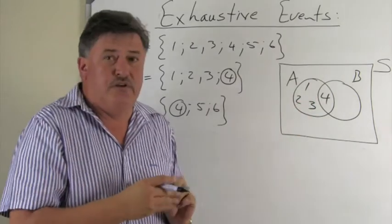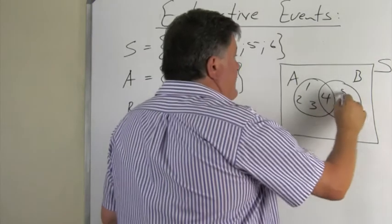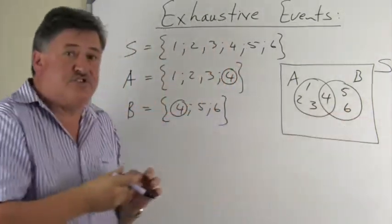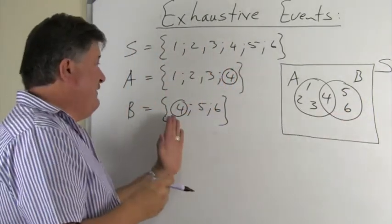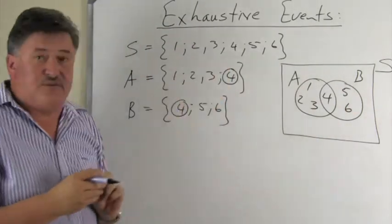You're all happy with that? A is now 1, 2, 3, 4. Now we look at event B. 4 is there already, we're still short 5 and 6. Let's double check if this is correct. Event B: 4, 5, 6. Event B: 4, 5, 6. It is correct.